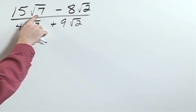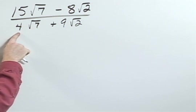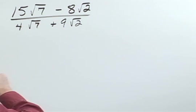The quantity 15 square root of 7 minus 8 square root of 2 all divided by 4 square root of 7 plus 9 square root of 2.